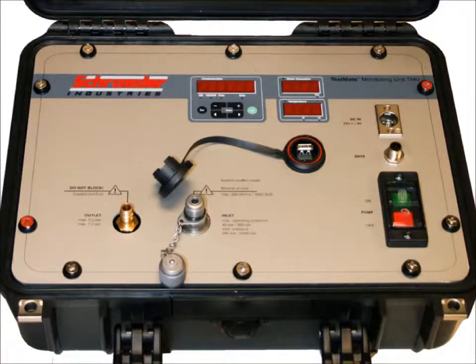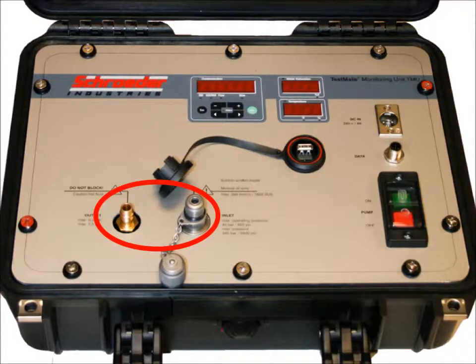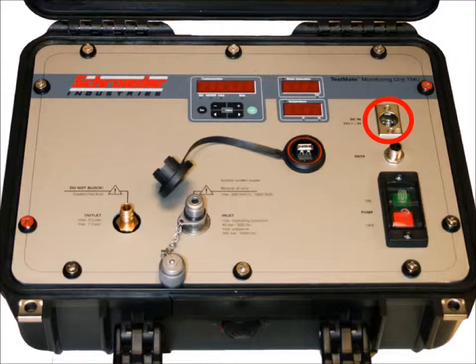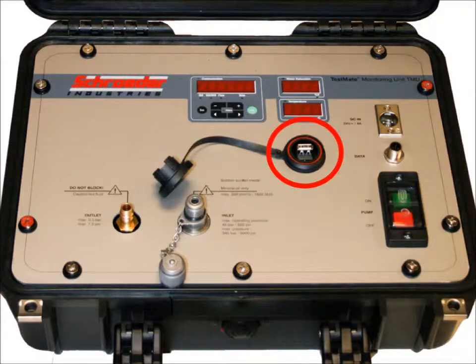This photograph shows the front panel of the TMU. It shows the display and keyboard, the inlet and outlet ports, the on and off switch for the unit, and the plug area where you plug the DC power supply into it. It also shows the USB port where you can put a flash drive into it and download the information for your computer.